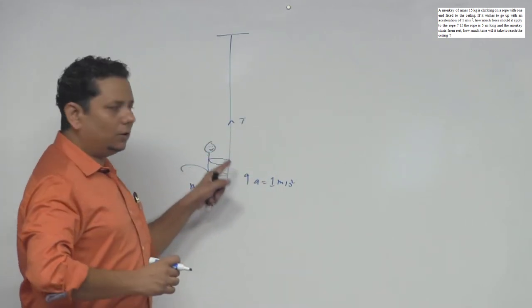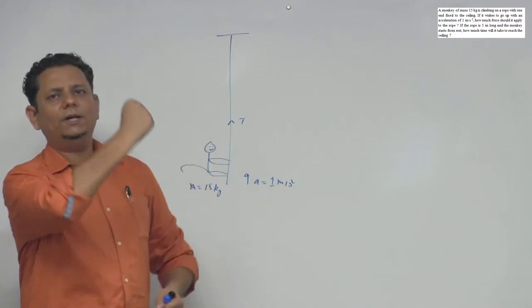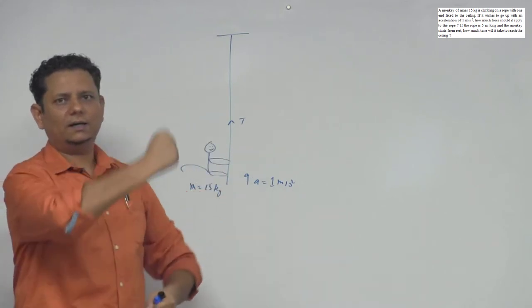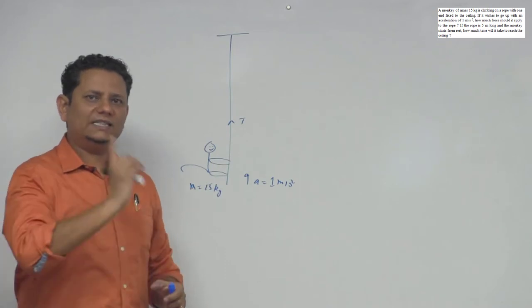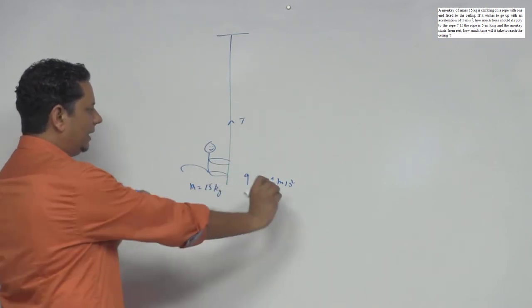The scenario is that the monkey is climbing due to forces applied by its internal system - the forces applied by internal muscles. Because of those forces, the monkey is climbing. But in this case, what we'll do is write equations by drawing the FBD.